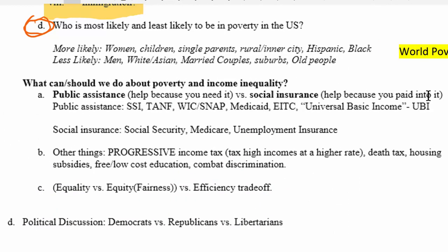Now that we understand how poverty is measured and who is more or less likely to be in poverty, what can we do about it? There are two types of government programs. Public assistance helps you because you need help — we give you money or housing assistance because you're poor. Social insurance programs are different — you paid into them, and because you paid in, if you need help, you get it.